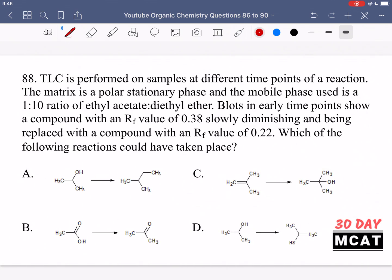In question 88, TLC is performed on samples at different time points of a reaction. The matrix is a polar stationary phase and the mobile phase used is a 1 to 10 ratio of ethyl acetate to diethyl ether. Blots in early time points show a compound with an RF value of 0.38 slowly diminishing and being replaced with a compound with an RF value of 0.22. Which of the following reactions could have taken place?